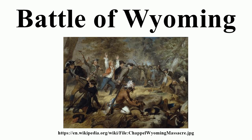Colonel John Butler recruited a regiment of loyalists for the effort, while Seneca chiefs Sayenqueraghta and Cornplanter recruited primarily Seneca warriors, and Joseph Brant recruited primarily Mohawk men for what essentially became a guerrilla war against frontier settlers. By April 1778, the Seneca were raiding settlements along the Allegheny and Susquehanna rivers, and by early June these three groups met at the Indian village of Tioga, New York. Butler and the Seneca decided to attack the Wyoming Valley while Brant and the Mohawks went after communities further north.